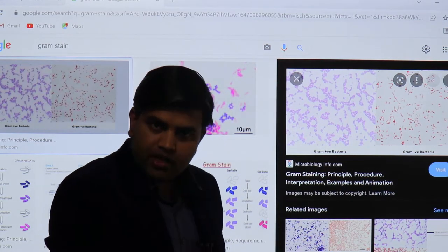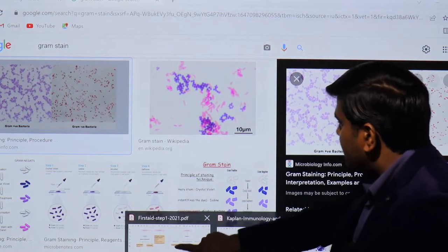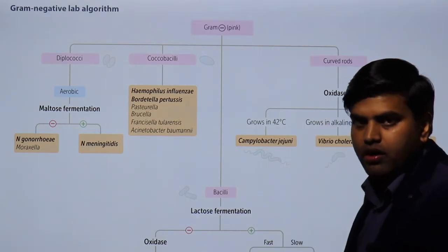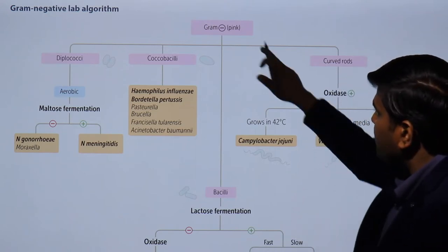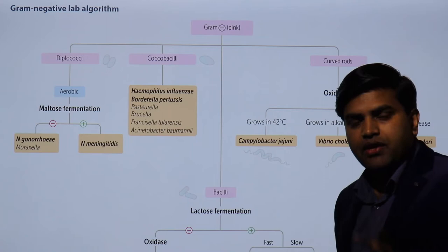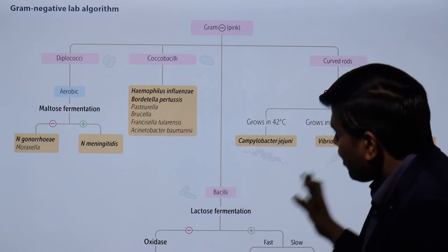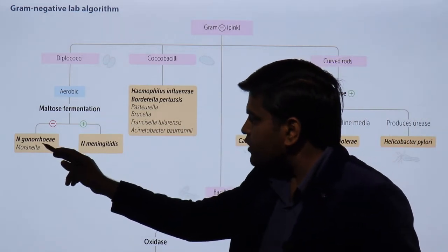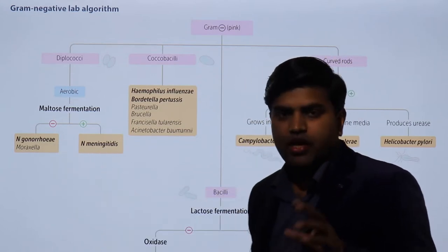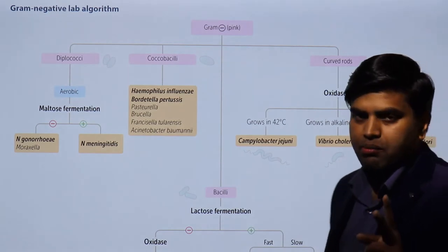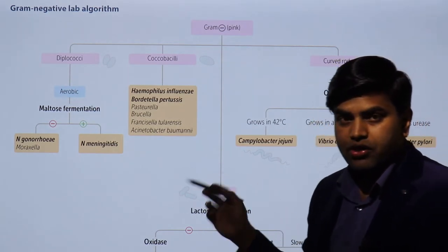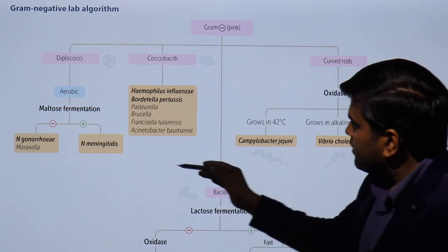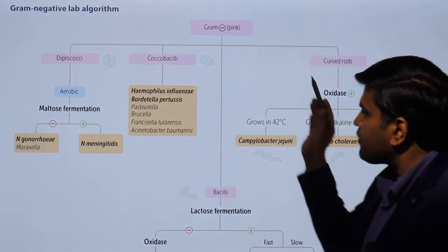Coming back to our USMLE Step 1 2021 microbiology, gram-negative bacteria — many are bacilli, only a few are cocci. In cocci there is the Neisseria group: Neisseria gonorrhoeae and Neisseria meningitidis, and another group is Moraxella. Only two groups of organisms to remember, mainly the Neisseria group which is of medical importance.